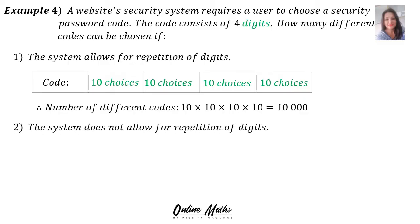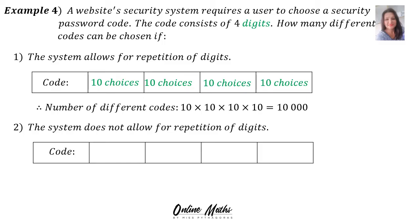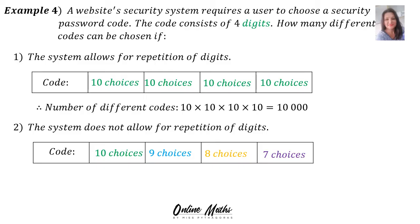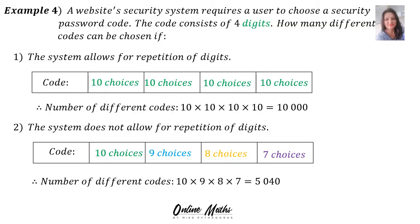Question 2: the system does not allow for repetition of digits. Again, make your pigeon hole with spaces for 4 digits. In the first space you have a choice of 10 digits. But since no repetition is allowed, the second space has only 9 choices, the third space has 8 choices, and the last space has 7 choices. According to the fundamental counting principle, the number of different codes will be 10 times 9 times 8 times 7, which is 5,040 different codes.